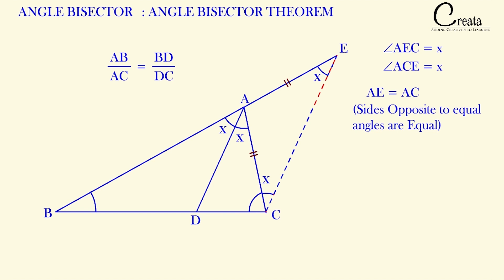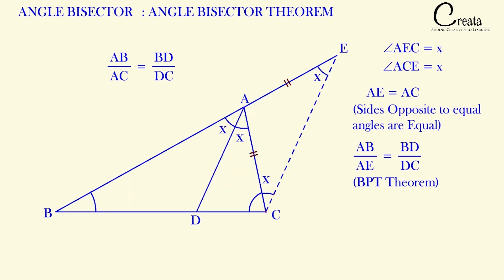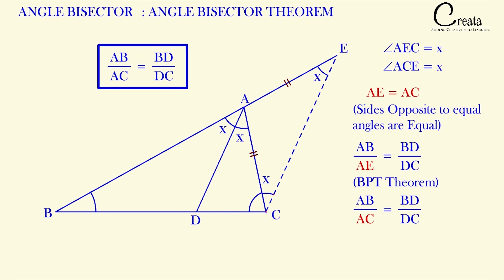Taking triangle EBC with line segment AD parallel to EC, by the Basic Proportionality Theorem (BPT) covered in the fundamentals of similarity of triangles, we get AB/AE = BD/DC. Since we just proved AC equals AE, we can replace AE with AC to get AB/AC = BD/DC — which is the proof of our property. This proof involves the concepts of similarity of triangles and transversal lines; students who have not completed these two concepts should do so before coming to this topic.